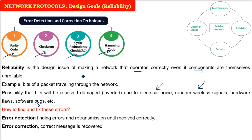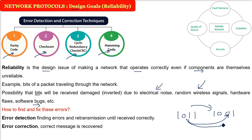Error detection is about detecting errors. For example, if you are sending 1011 and you receive 1001, the third bit is wrong - detecting that is error detection. If you want to restore 1011 by changing the third bit back to 1, that is error correction.